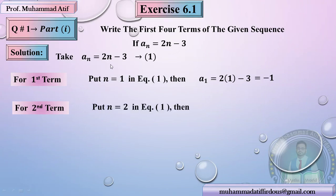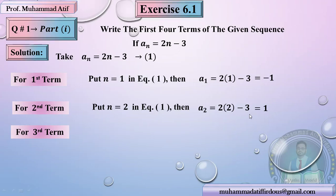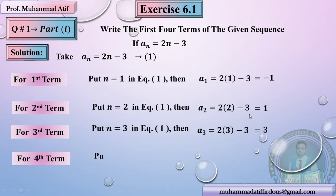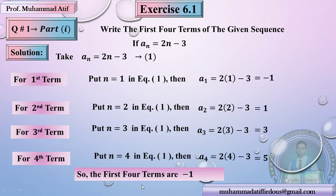For the third term, we put n = 3, so a3 = 2×3 − 3 = 3. Similarly, for n = 4, we get the fourth term a4 = 2×4 − 3 = 5. So if we write them together, the first four terms are: −1, 1, 3, and 5. Very simple question, very easy — but please pay attention to the presentation and solve it logically.